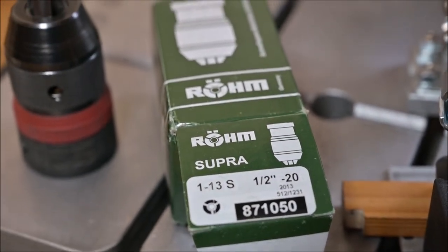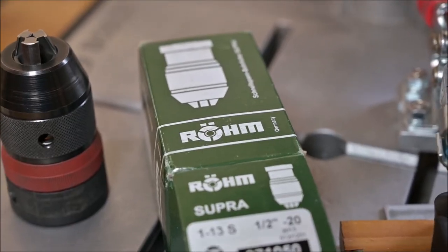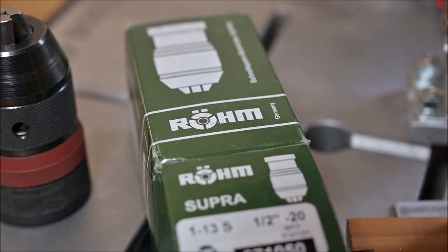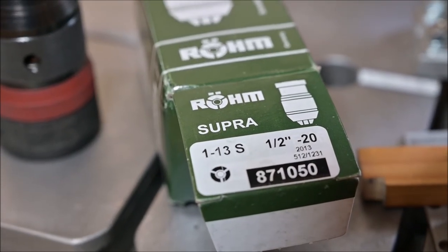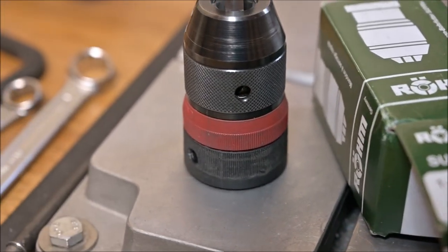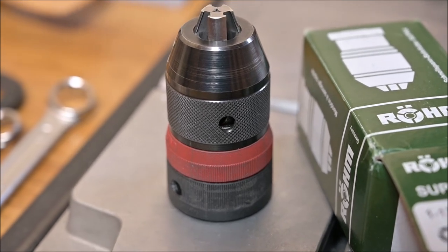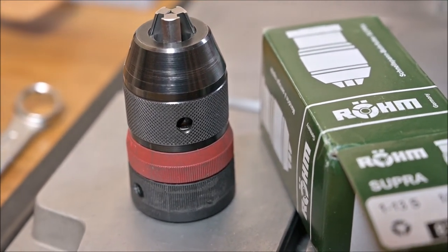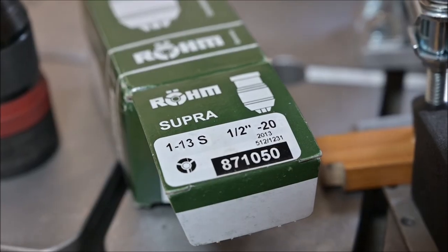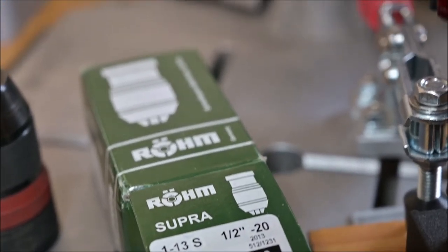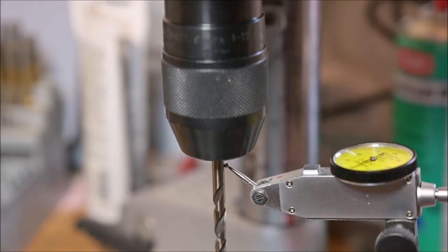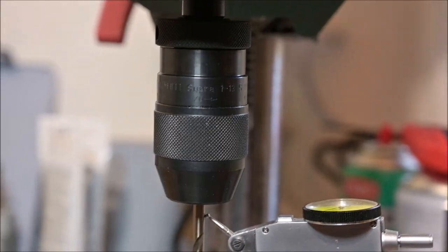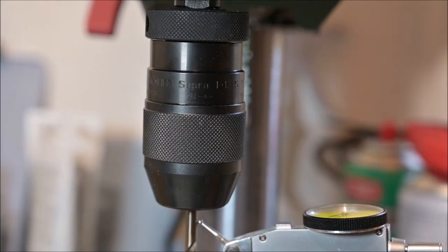So once again, the new one is a Röhm Supra S, 1 to 13 millimeter, and you can read the part number yourself if you are interested in this one. And probably I will keep the old chuck, maybe replace the chuck on my hand drill which is an impact drill. So of course it's more suitable for that one than it is for a bench drill.